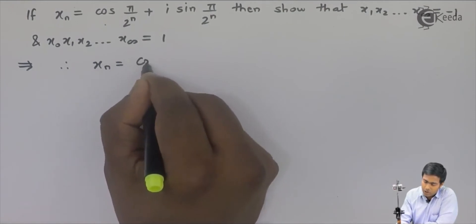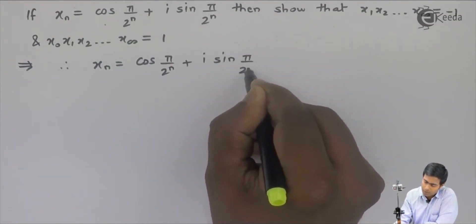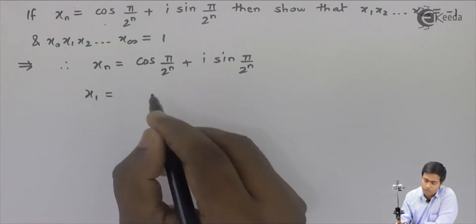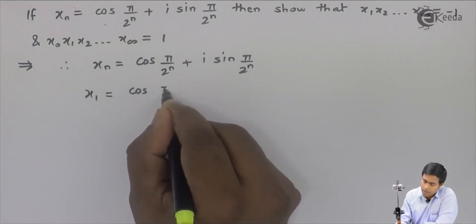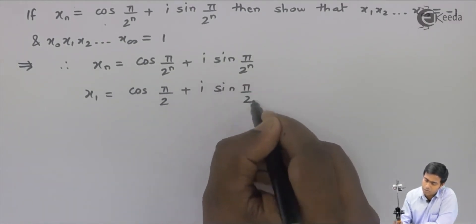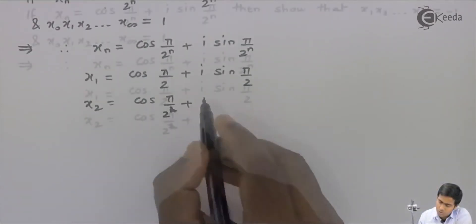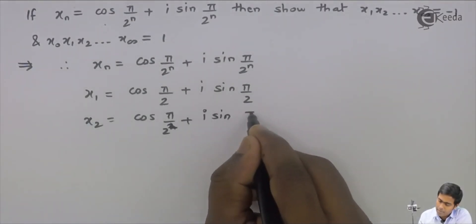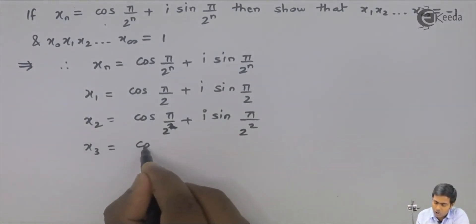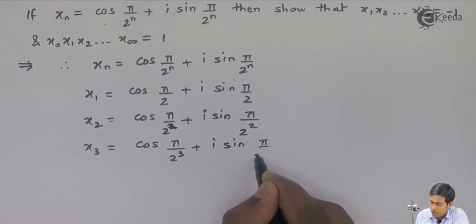x_n is given as cos(π/2^n) + i·sin(π/2^n). For x1, substituting n=1 gives cos(π/2) + i·sin(π/2). Similarly, x2 = cos(π/2²) + i·sin(π/2²), and x3 = cos(π/2³) + i·sin(π/2³).